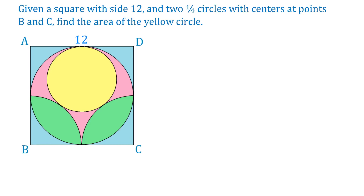In this figure we have a square with a side of 12 units. We also have an inscribed circle and two quarter circles. One of them has the center at point B and the other one at point C. We need to find the area of the yellow circle.